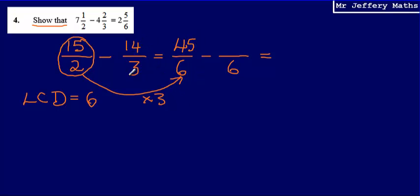Then doing exactly the same thing here, 14/3—what has 3 been multiplied by to reach 6? It's been multiplied by 2, so I have to multiply the numerator 14 by 2 as well. So 14 multiplied by 2 gives me 28. So I've got 45/6 minus 28/6.